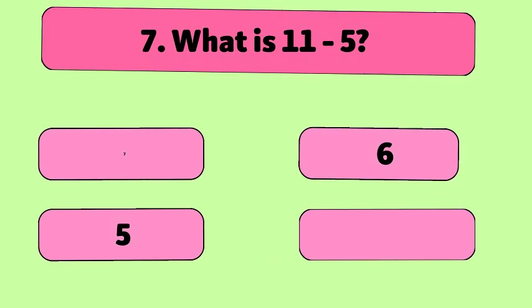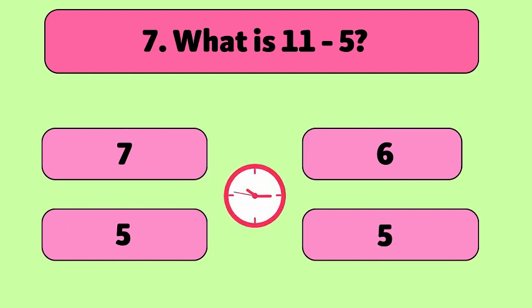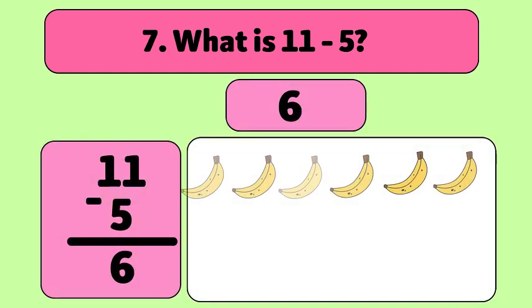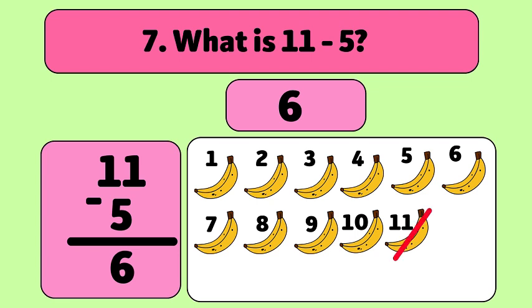What is 11 minus 5? The answer is 6. We start with 11 bananas and take away 5. Let's count: 1, 2, 3, 4, 5. We have 6 bananas now.